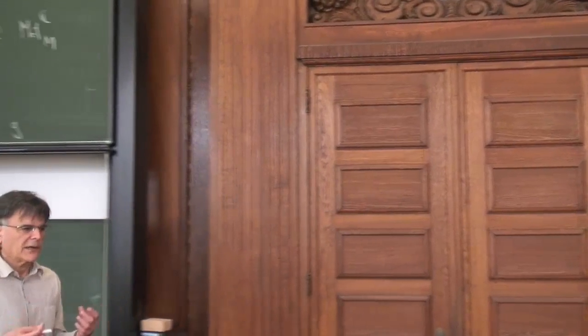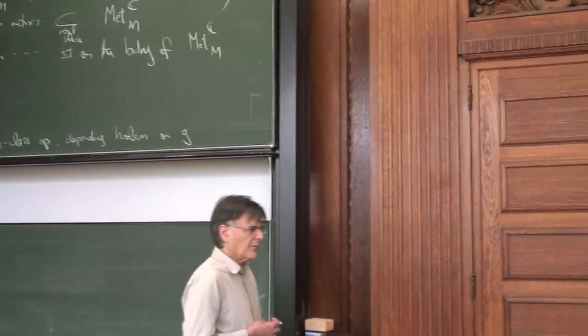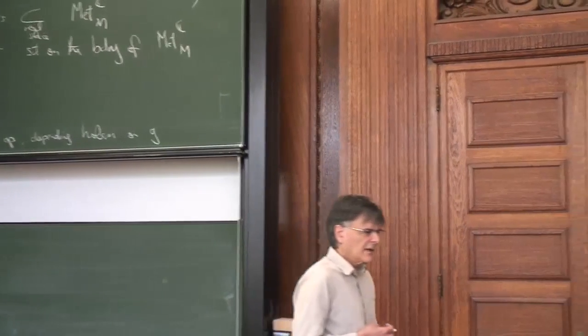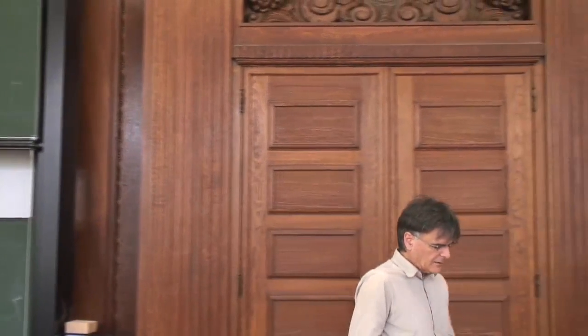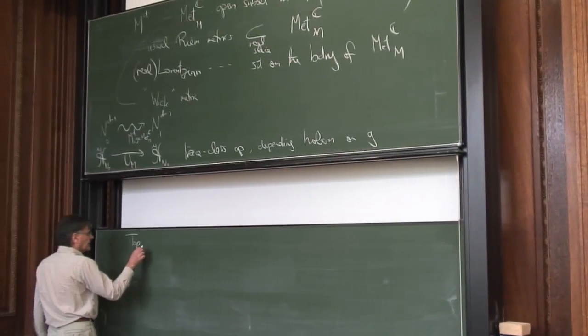We'll come back in a moment to how we get to the boundary and what happens there. Remember in the last lecture I said there were a couple of things I was going to come back to — this seems as good a moment as any. I'm afraid this is going to be a somewhat technical lecture altogether. The first thing I promised to say something about was the kind of topological vector space I was discussing.